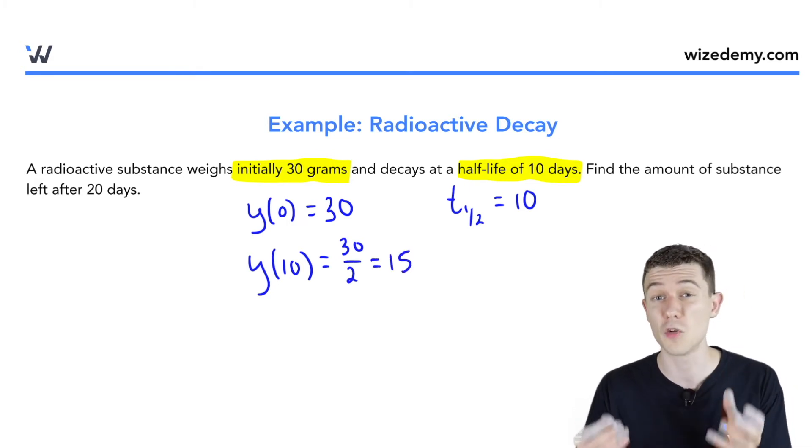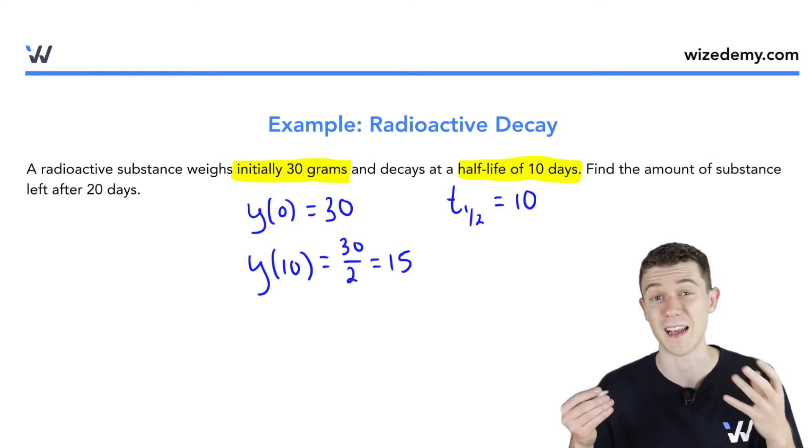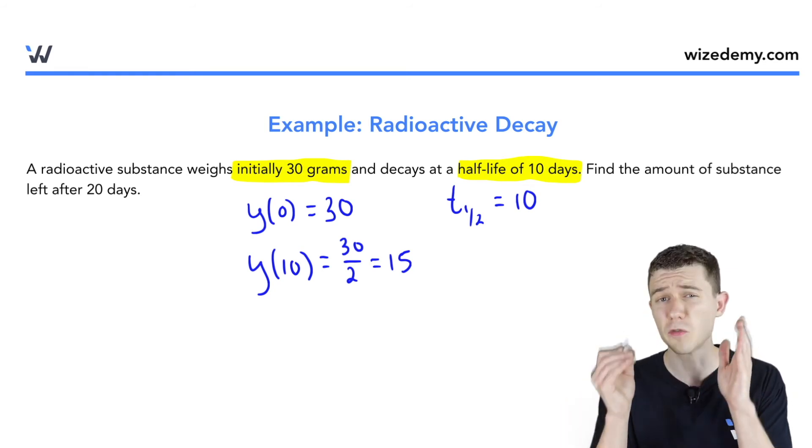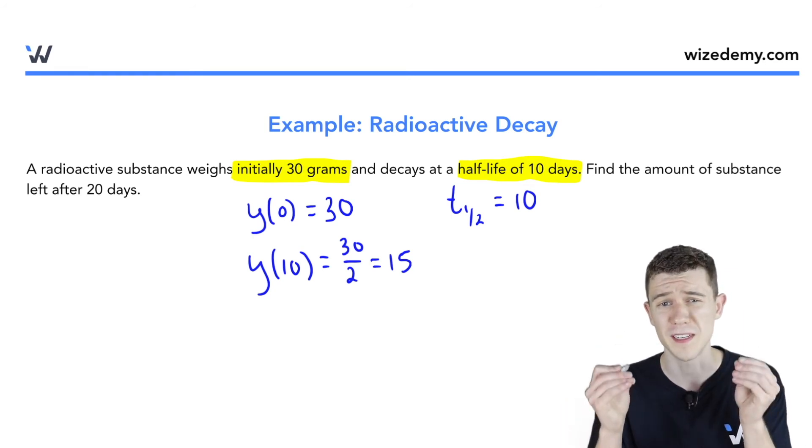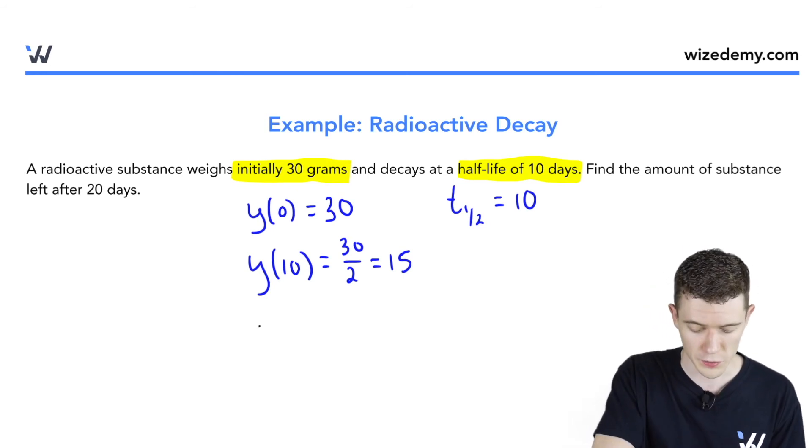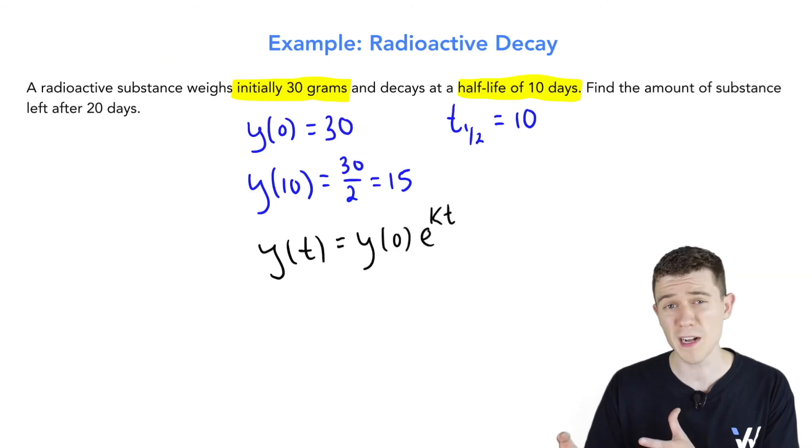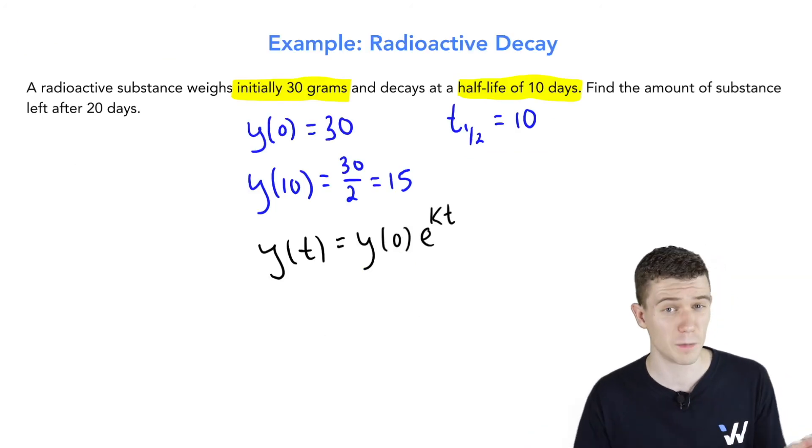We can use this information to write the equation for the amount of substance at any time t. Remember the solution to the exponential growth and decay differential equation. The solution is y(t) = y(0)e^(kt). k positive means we're growing, k negative means we're decaying. We're going to see a negative k value here shortly.